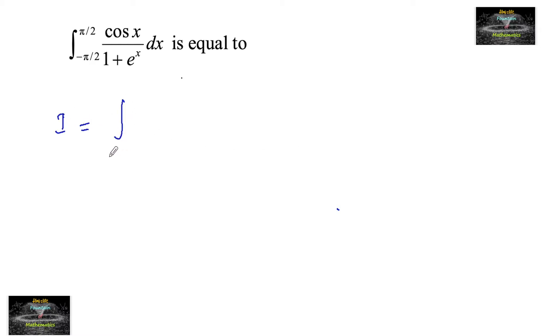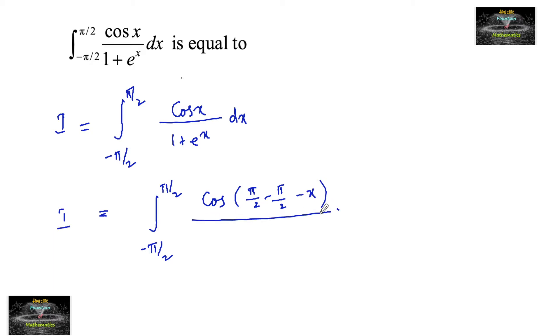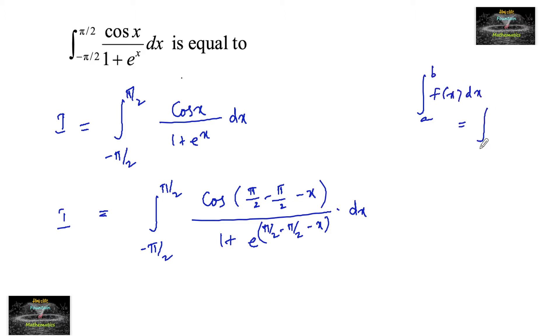Let's say integral I is equal to the integral from minus pi by 2 to plus pi by 2 of cos(x) upon 1 plus e to the power x dx. This integral can also be written as the integral from minus pi by 2 to plus pi by 2 of cos(pi by 2 minus pi by 2 minus x) divided by 1 plus e to the power of (pi by 2 minus pi by 2 minus x) dx, by using the property: integral a to b of f(x) dx equals integral a to b of f(a plus b minus x) dx.